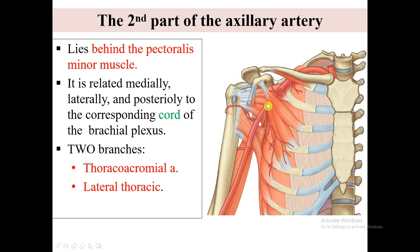From the inferior or lateral border of pectoralis minor, posteriorly, arises the lateral thoracic artery. The lateral thoracic artery supplies the medial and anterior wall of the axilla. In women, branches emerge around the inferior margin of pectoralis major muscle and contribute to the vascular supply of the breast.